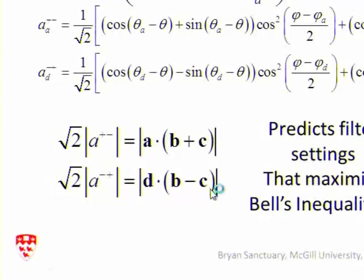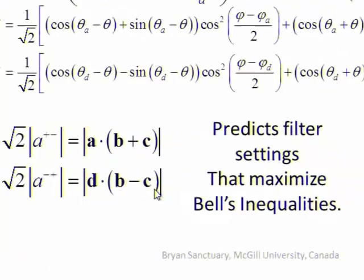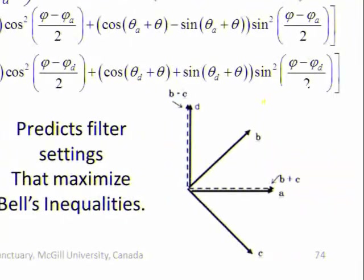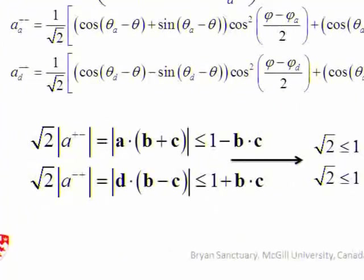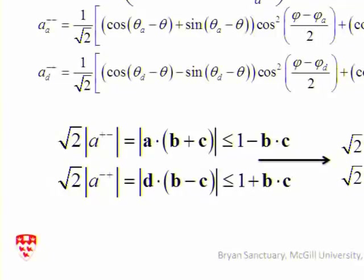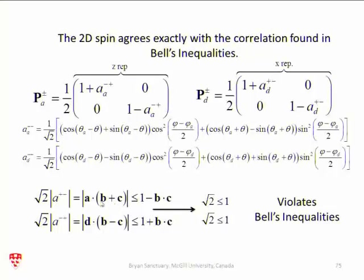And that, then, explains why the filter settings are chosen which maximize Bell's inequalities. These, actually, turn out to be Bell's inequalities in Bell's original 1964 paper. And because B and C are orthogonal, these are zero. And you can easily see that if these are collinear, this can be maximum of one. Root 2 is greater than one.